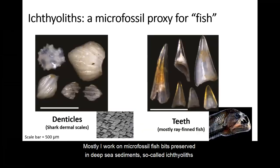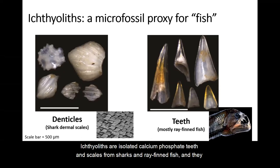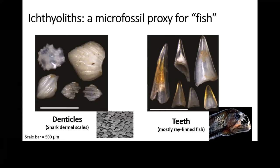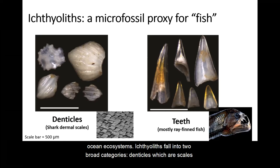Mostly I work on microfossil fish bits preserved in deep-sea sediments, so-called ichthyoliths. Ichthyoliths are isolated calcium phosphate teeth and scales from sharks and rays and fish, and they are well preserved in nearly all deep-sea sediment types due to their calcium phosphate composition. Ichthyoliths preserve a high-temporal resolution record of the evolution and ecology of marine vertebrates in the open ocean, and they can reveal some incredible stories about fish, sharks, and open ocean ecosystems.